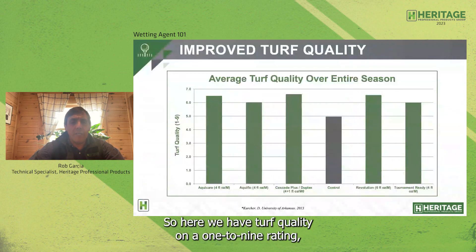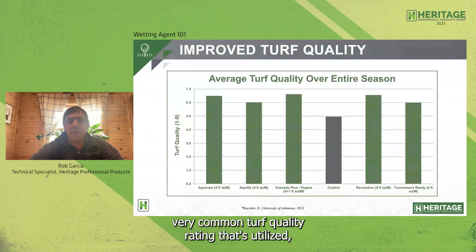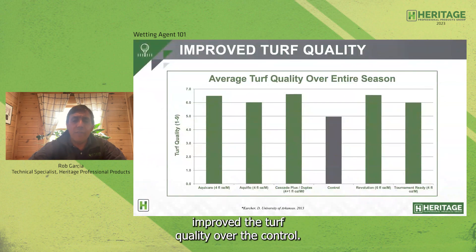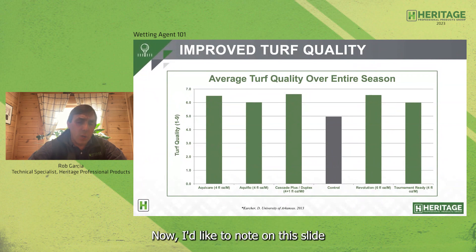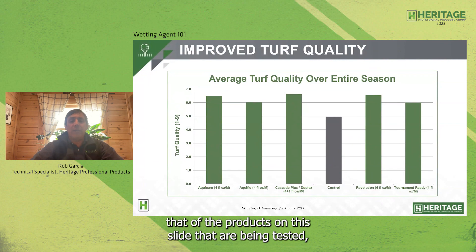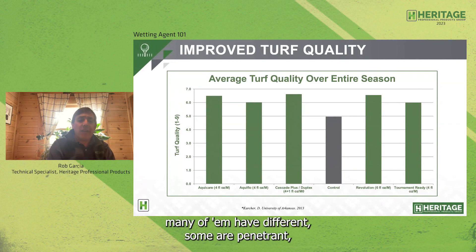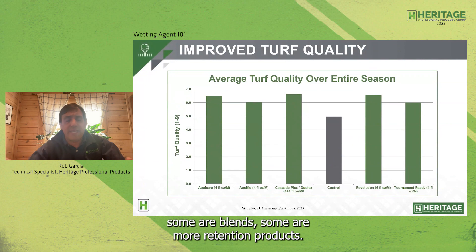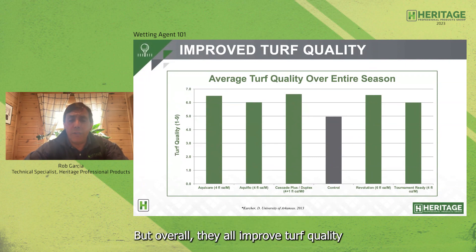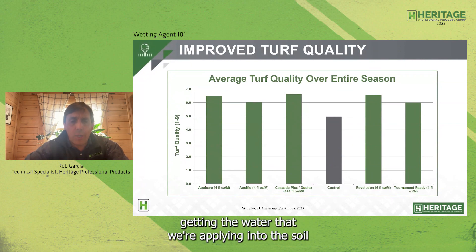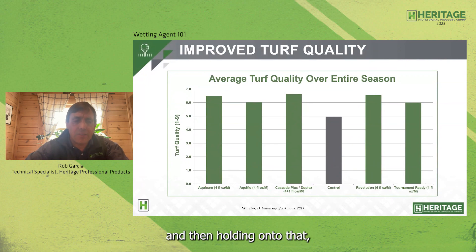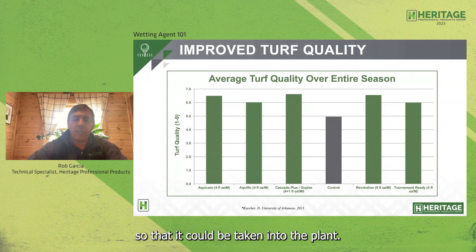Looking at improved turf quality: using a one-to-nine turf quality rating, all of the products tested improved turf quality over the control. The products on this slide include penetrants, blends, and retention products, but overall they all improve turf quality by doing a better job of getting applied water into the soil, addressing the hydrophobic condition, and then holding onto that water so it can be taken into the plant.